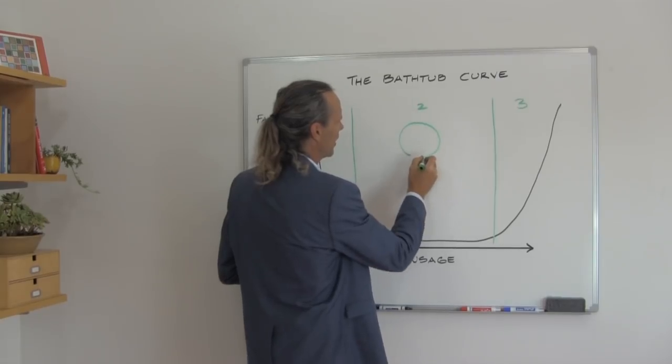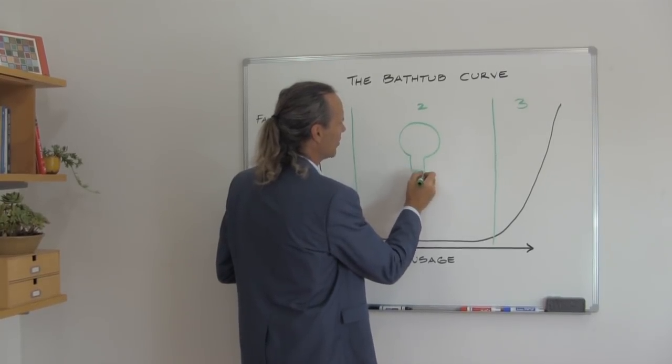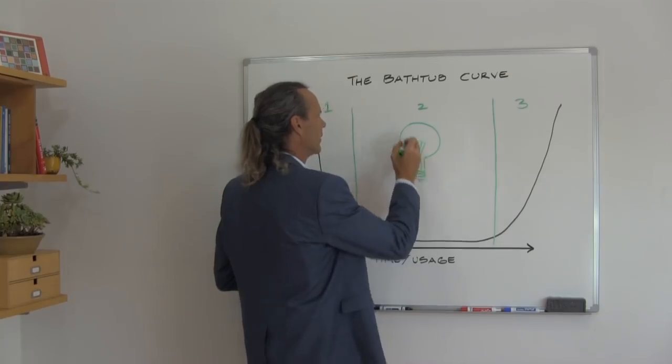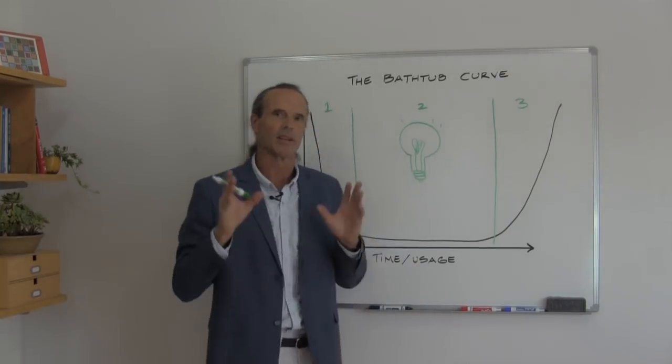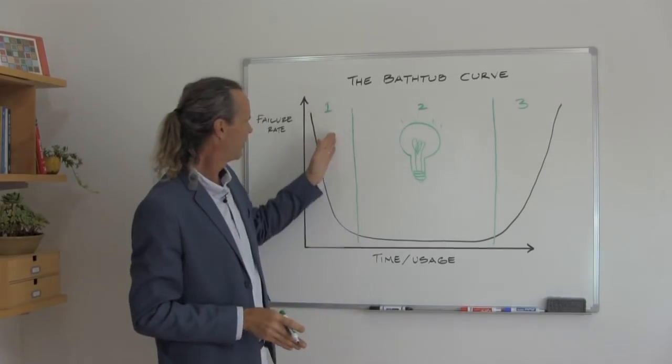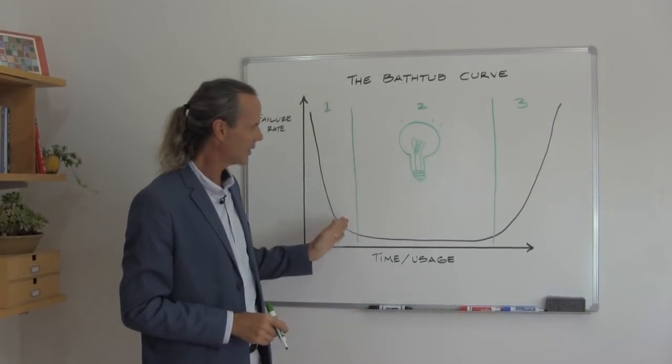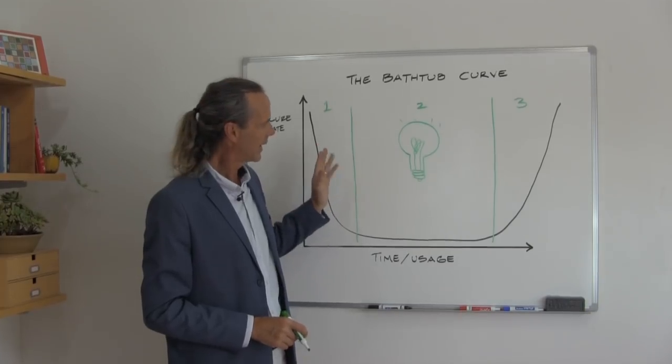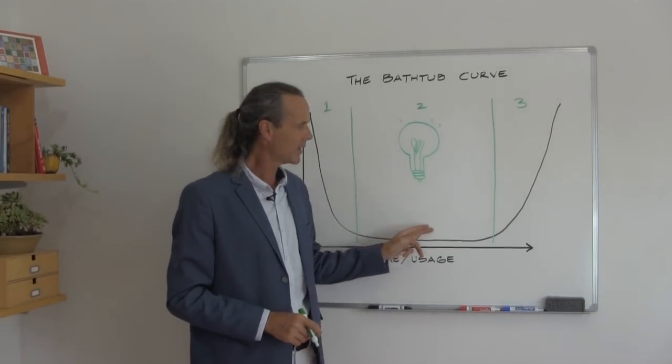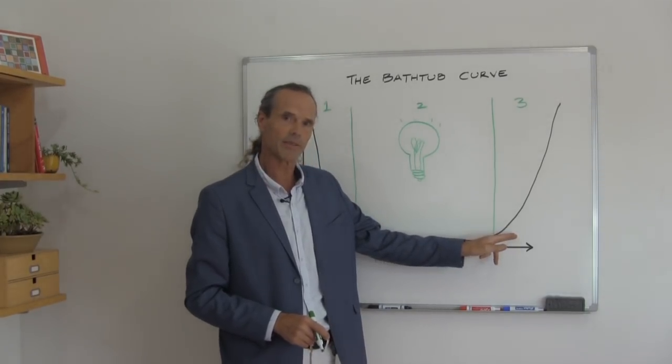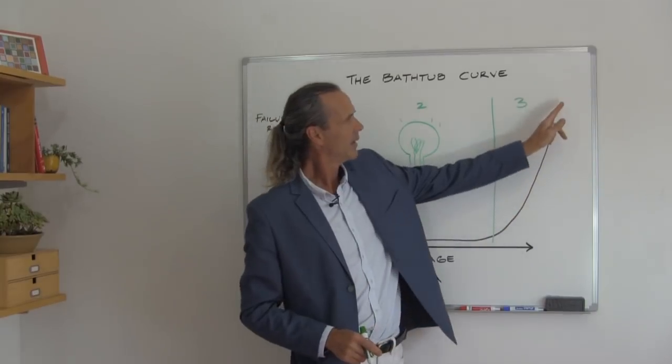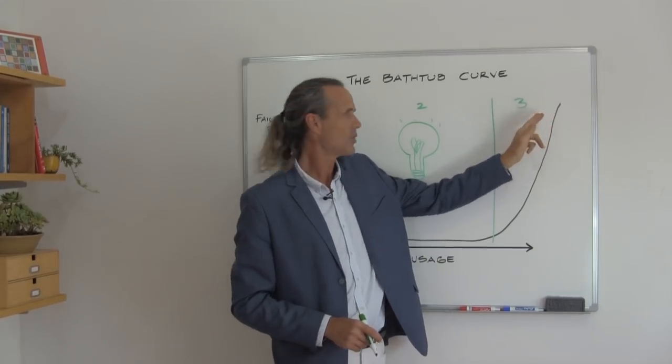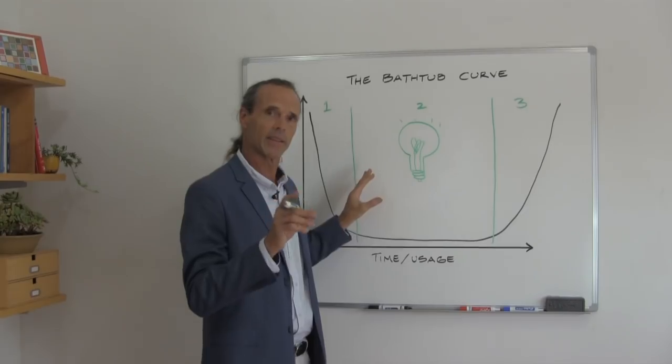In fact, I will use a light bulb as an example of the bathtub curve. Now we've all had the experience of bringing home a light bulb from the store, and that light bulb when we installed it failed. You put it in—pop—it failed. It failed during the first phase, it never got a chance to get into the stable period. Now if that light bulb would have worked out of the box and got into the stable period, there's a very good chance that it would have gotten to this period, which is the end-of-life phase, where the failure rate increases as the usage goes on exponentially, right? So the light will fail eventually.